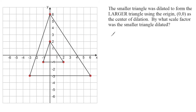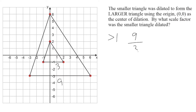All right, let's do another example. The first thing we should do when determining scale factor is figure out if we are shrinking or stretching our shape. This problem states that the smaller triangle was dilated to form the larger triangle, so we are stretching. I'll start by using corresponding side lengths: the length of the smaller triangle's base is three and the length of the larger triangle's base is nine. Because we are stretching, our scale factor is going to be greater than one, so we write nine on top and three on the bottom. Nine over three simplifies to three, which is our scale factor.